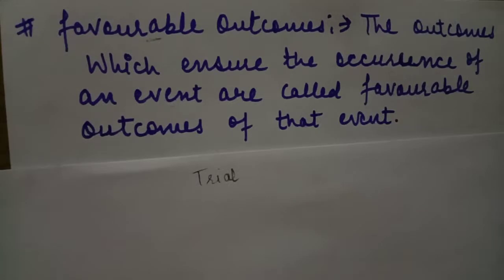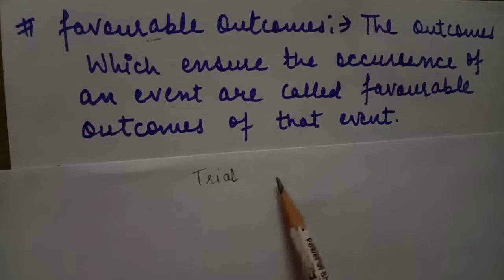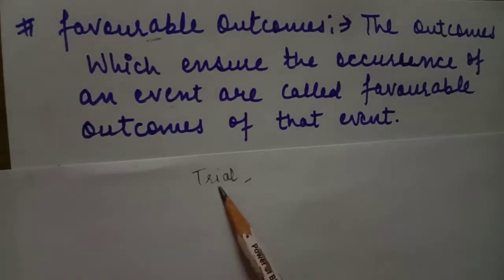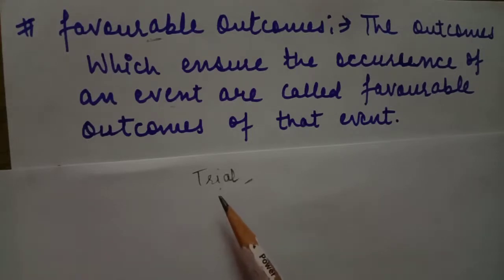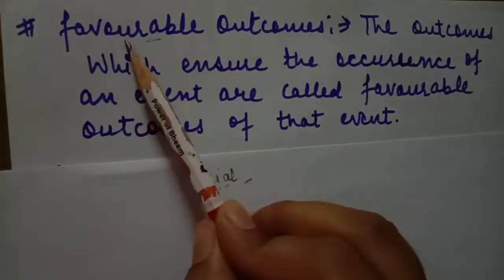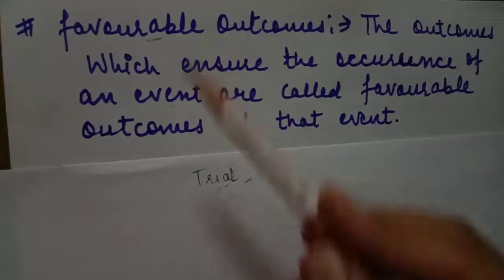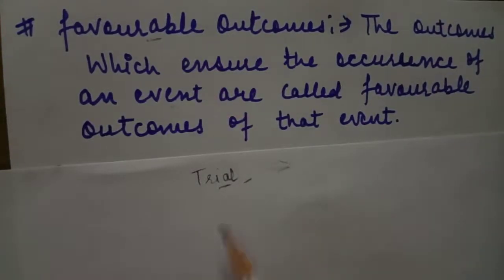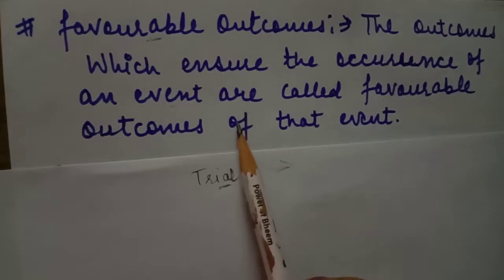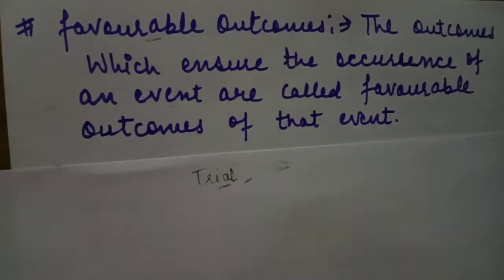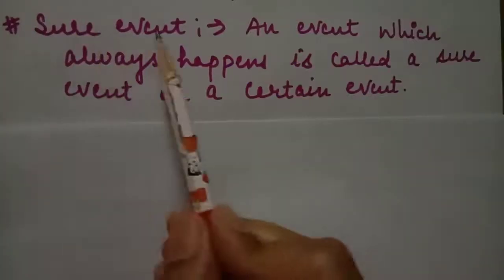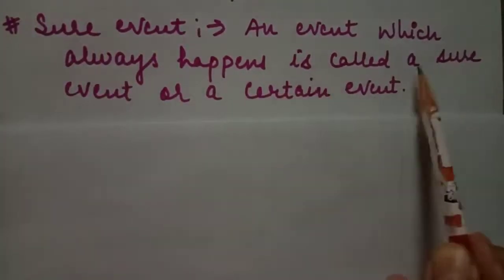A trial is an action which results in one or several outcomes in the given event. When we perform something, we make attempts again and again — we call them trials. Out of the trials we get many results, and only those that satisfy the given condition are called favorable outcomes.